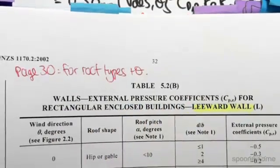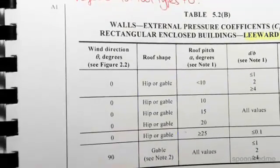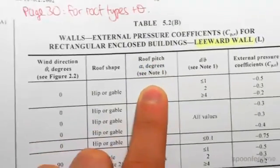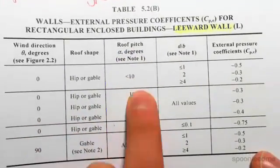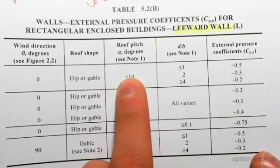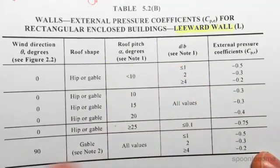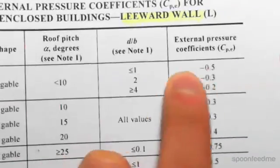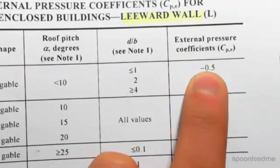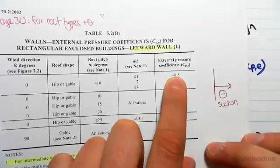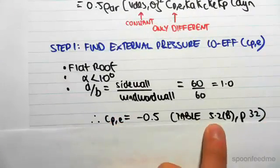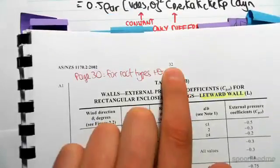Well, roof shape is just flat, so we can just sort of ignore all this stuff. We just need to go to roof pitch. So you can see that our roof pitch is less than 10 degrees because it's flat. The d on b ratio we said was one, which means that our cpe value is just going to be minus 0.5. So it's pretty simple: cpe is minus 0.5 from table 5.2b on page 32.